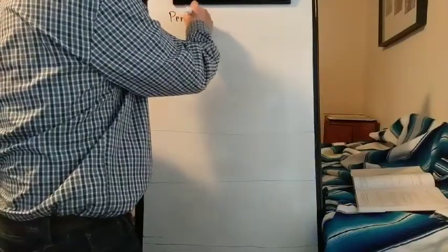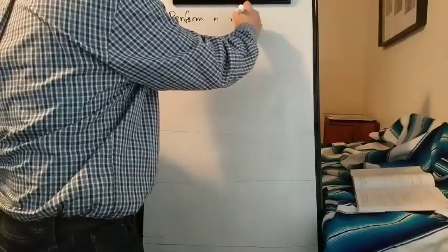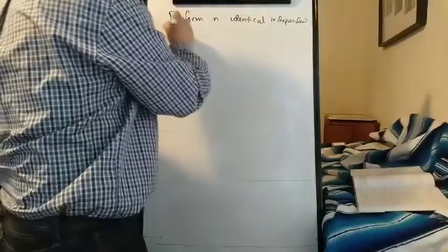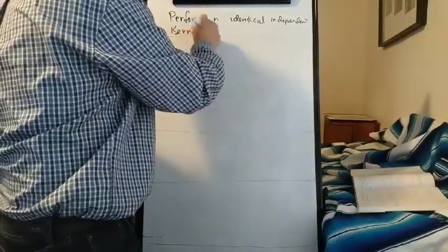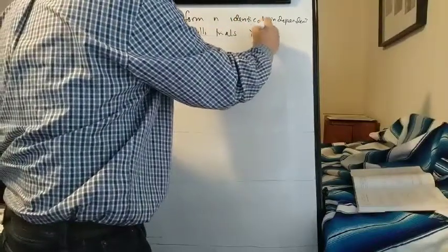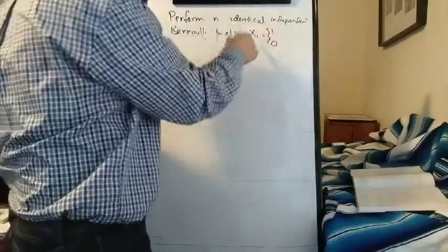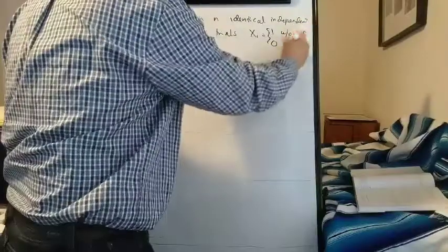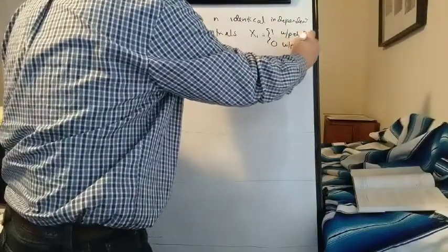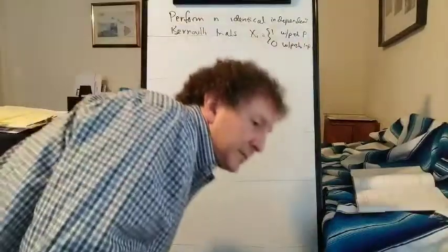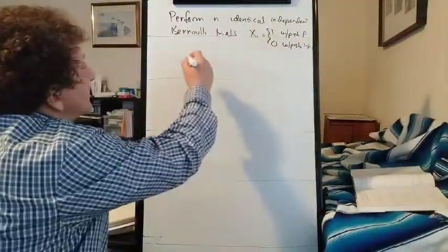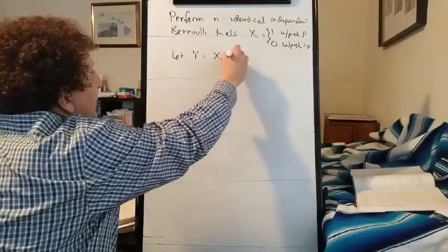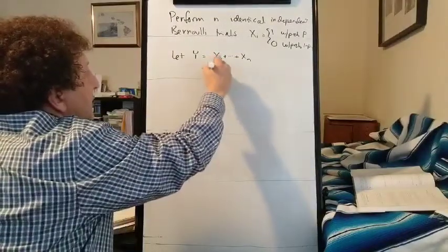We'll perform n identical independent Bernoulli trials. Each trial Xi is going to be 1 with probability P and 0 with probability 1 minus P. Then we'll let Y be X1 plus the sum up to Xn, which is going to be the number of successes.